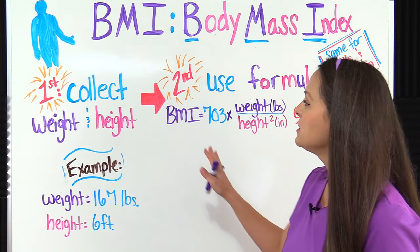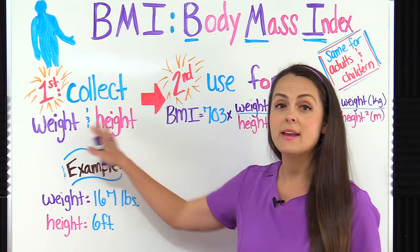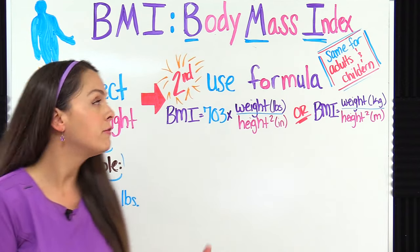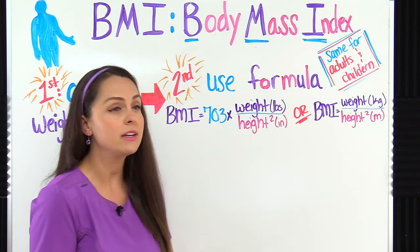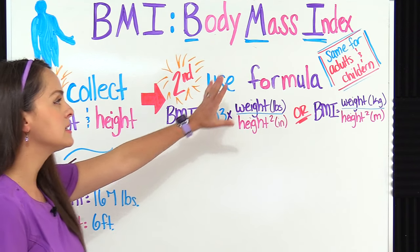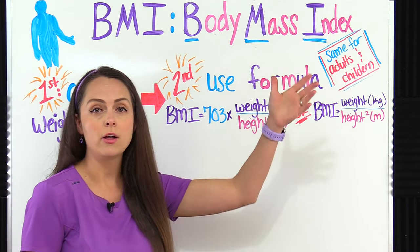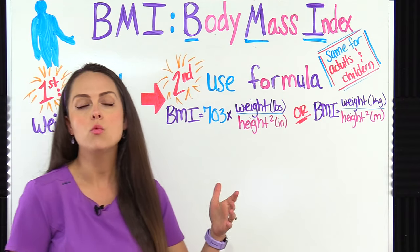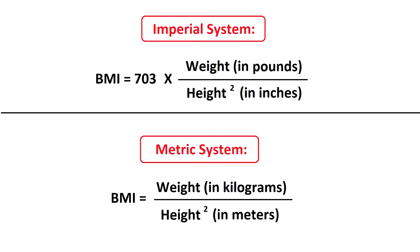First what you want to do is collect the patient's weight and height. Then once you have that you want to use a formula and plug in the information you have. The formula that you use is the same for adults and children, male or female, but it depends on which measurement system you're using. If you're using the imperial system such as pounds and inches you're going to use this formula. But if you are using the metric units like kilograms and meters you would use this formula.